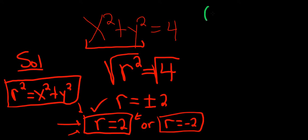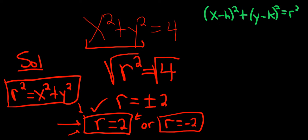Recall that the equation of a circle is given by (x minus h) squared plus (y minus k) squared equals r squared. Here, h and k are the center, so the center would be (0, 0). And r squared is 4, so r is just 2. Basically, we have a circle centered at the origin of radius 2.